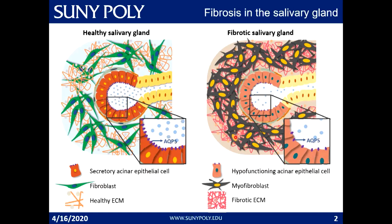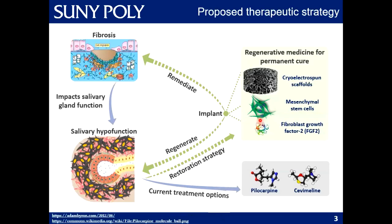The organ we're interested in is the salivary gland. Fibrosis in the salivary gland causes reduced production of saliva — the cells lose their phenotype and start secreting less saliva. Traditional therapies have been directed to increase saliva production, but not treat the root cause of this problem. They have not been very effective in increasing saliva production, and oftentimes the side effects of these medications are much worse than the symptoms of the condition itself.